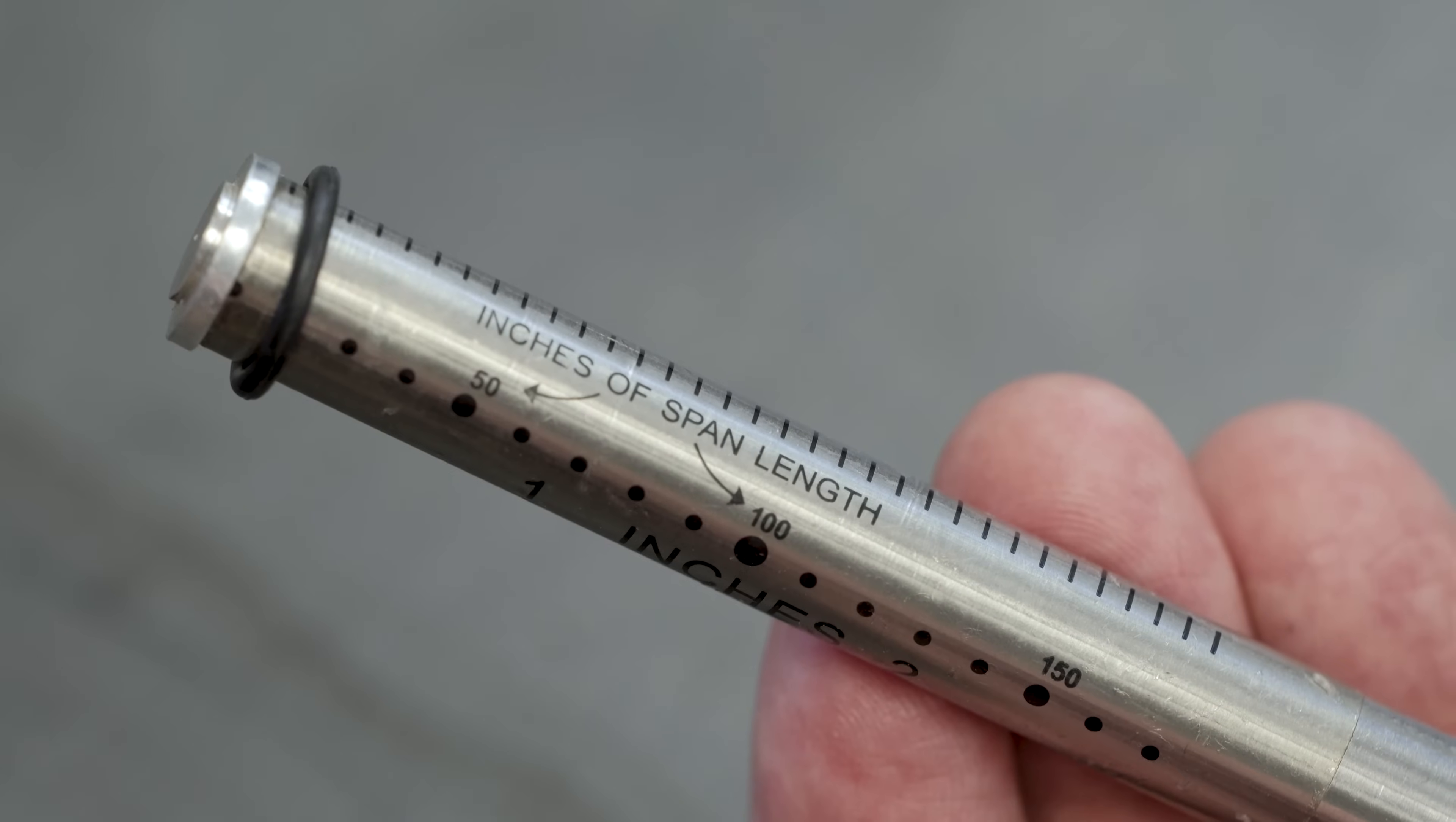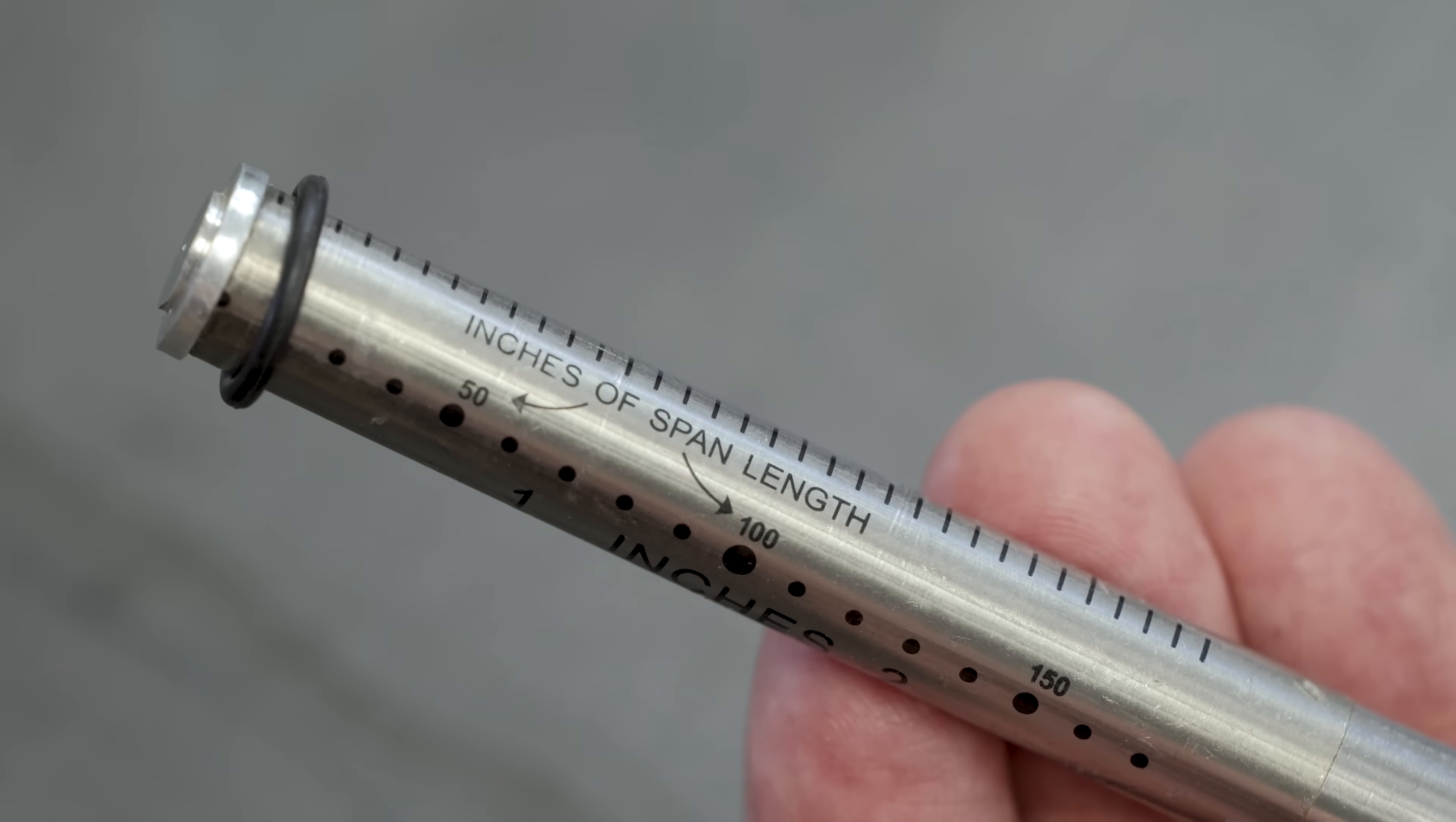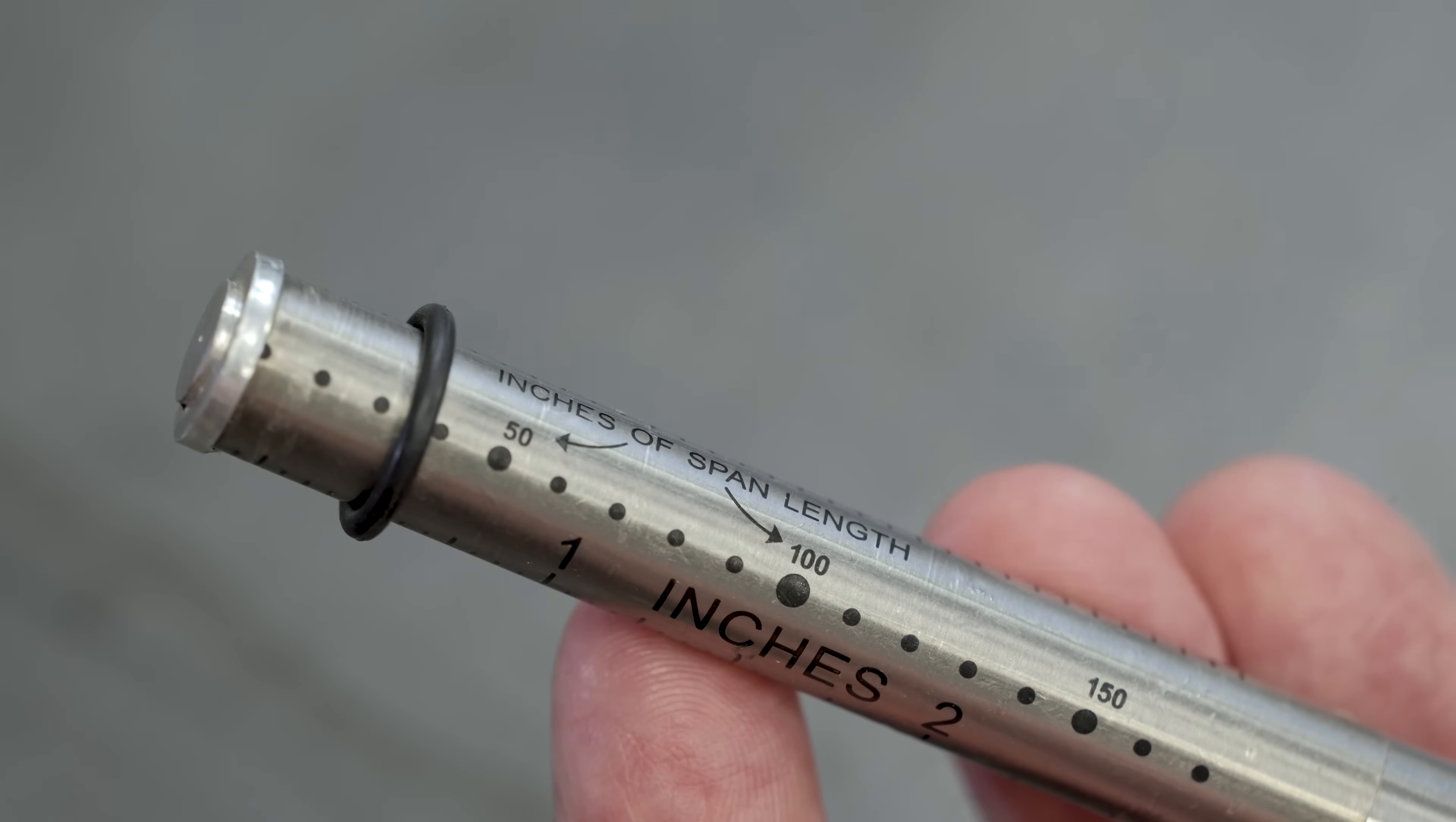Let's just say the two shafts, the motor shaft and the fan shaft, are 40 inches apart, center to center. I would just roll this O-ring up, align it to the dot for 40 inches, and that will set my span length.